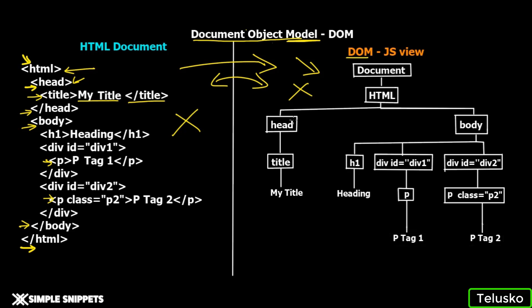JavaScript can access each of these objects using different functions, which we'll see in future videos, and then manipulate their attributes. For example, if you want to change the text inside the title, you can easily access the title object in JavaScript by accessing the Document Object Model and then change the text. Similarly, you can change the size, add color, add background to the heading tag, division, or paragraph — you can change text, hide text, animate text, and do everything on the DOM using JavaScript.